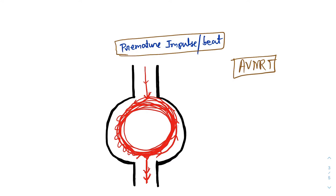Heart rate in AVNRT will be around 150 to 250 per minute.